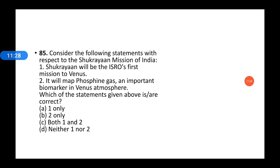Consider the following statements with respect to the Shukrayaan mission of India. Which of the statements given above are correct? First: Shukrayaan will be the first ISRO mission to Venus. Second: it will map phosphine gas, an important biomarker of Venus's atmosphere. Both statements are correct. The option is C. Shukrayaan will be ISRO's first mission to Venus and will map phosphine gas, an important biomarker in Venus's atmosphere.